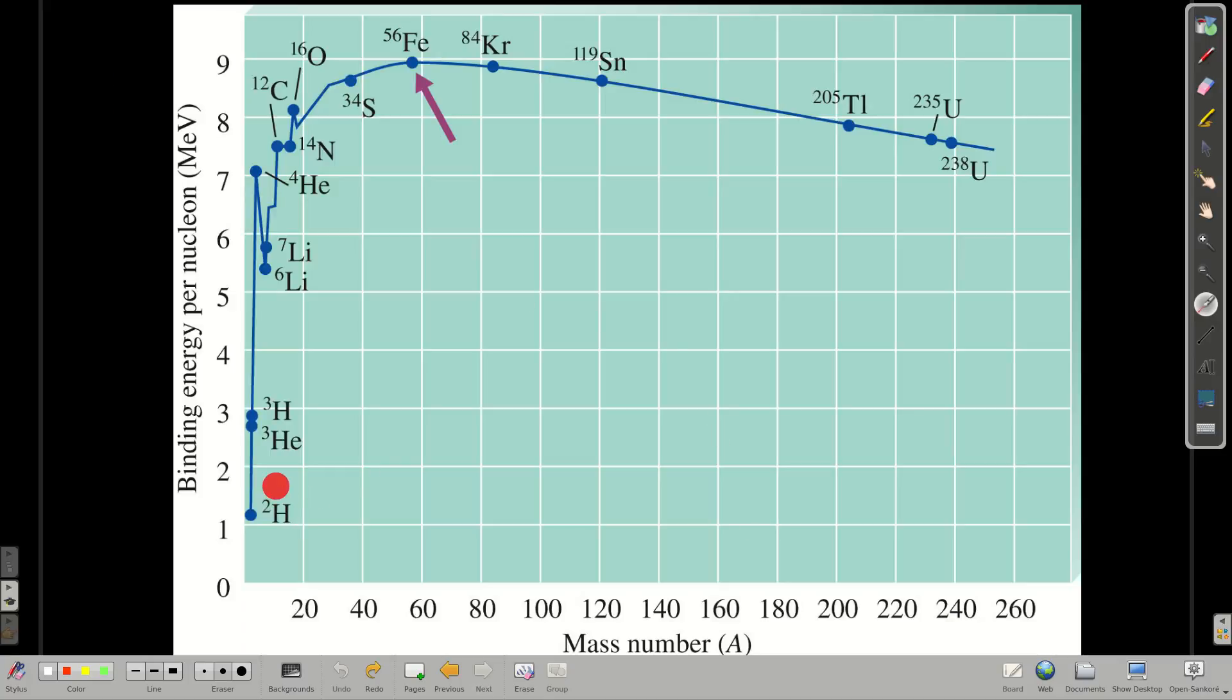So if we look at a graph of the binding energy per nucleon in mega-electron volts versus the mass number, we can see that it rises up and then starts coming back down. The higher up an element is, an isotope is, on this curve, the more stable it is. It ends up the one that's the very highest is iron 56.